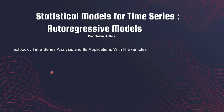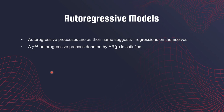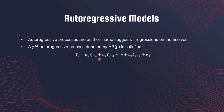Welcome back. In this video we shall take a look at autoregressive models. Autoregressive models, as the name suggests, are regressions on themselves. An autoregressive process of order P satisfies this equation: the current value YT is based on the past P values and the current white noise term. You can think of this as a regression model where YT is the response and the past P values are the regressor terms.